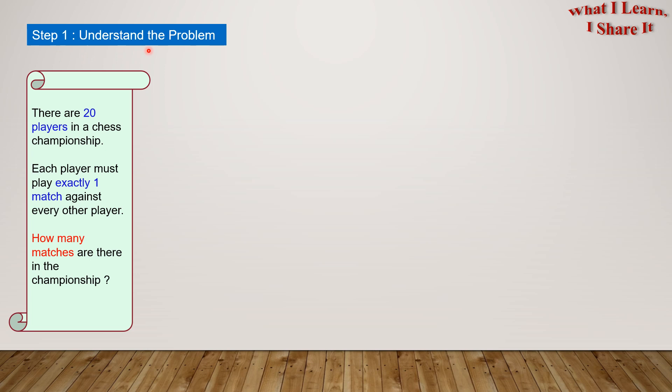Step 1: Understand the problem. So what are we given? We are given that the total number of players equals 20, and each player plays exactly one match with every other player. What is there to find? We have to find the number of total matches.